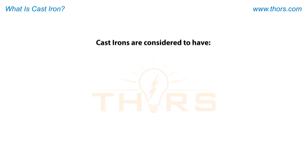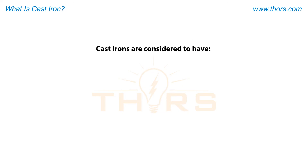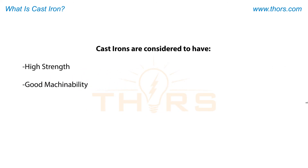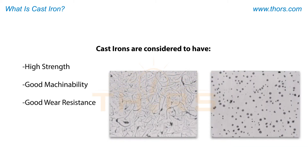Cast irons are considered to have high strength, good machinability, and good wear resistance. Such mechanical properties are directly influenced by the microstructure of the metal.